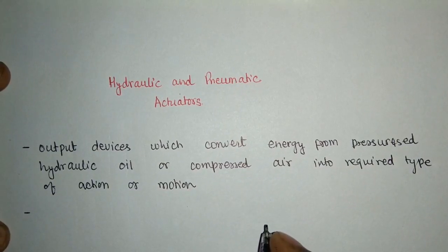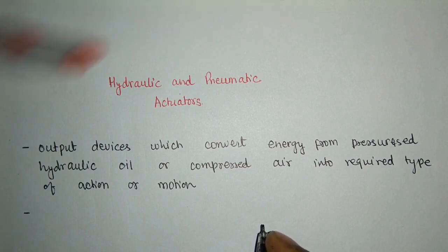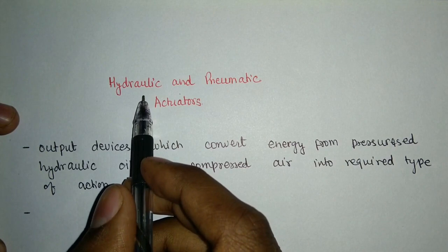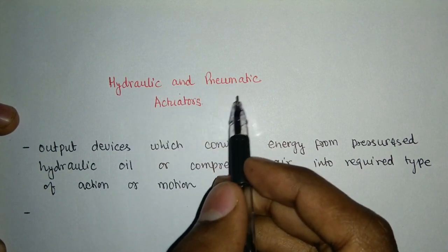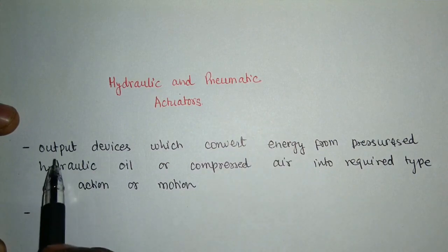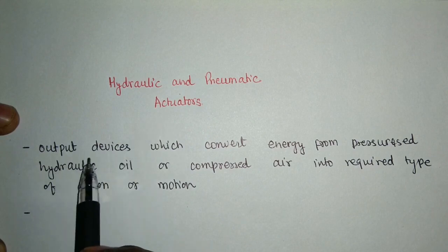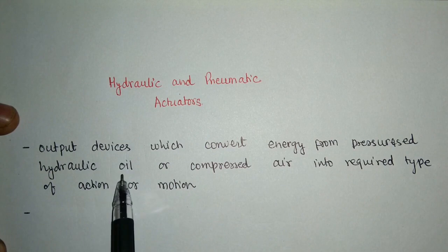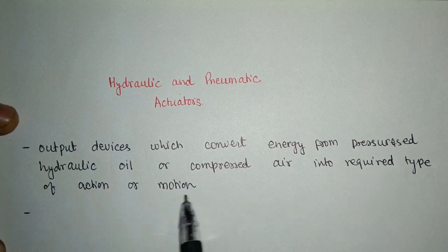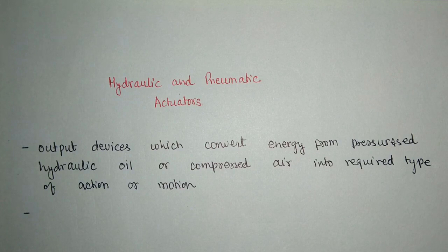Welcome everyone, my name is Pramod Besal and in this video we are going to discuss hydraulic and pneumatic actuators. They are common in construction. The only difference is the driving factor: in hydraulics we have pressurized oil, and in pneumatics we have compressed air. An actuator is an output device which converts energy from pressurized hydraulic oil or compressed air into the required type of action or motion.